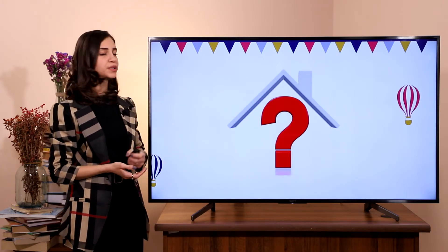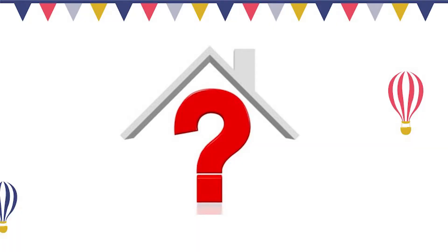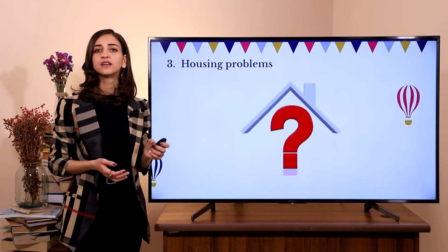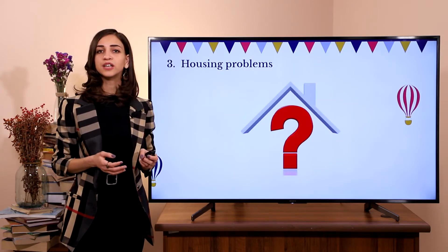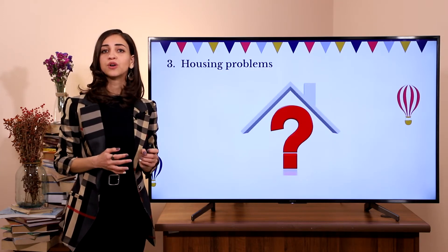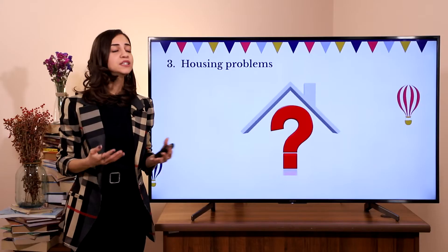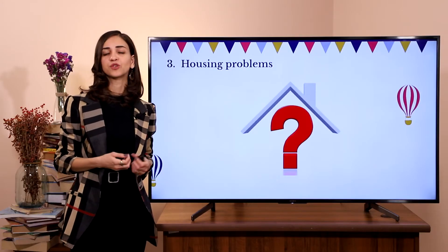Next problem. What can you notice here? The problem is related to houses. People have problems — they don't know where they can live. There are no houses for people.